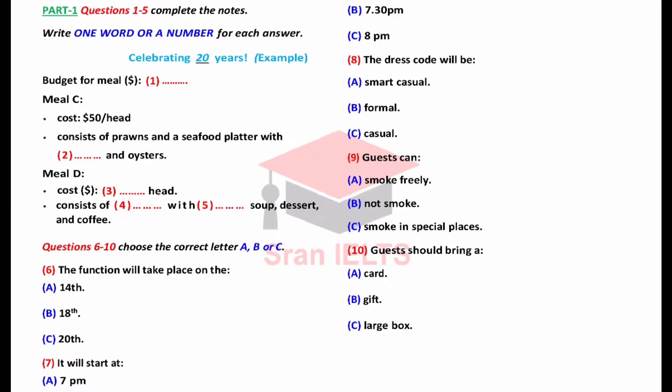Section 1. You will hear two colleagues, Marcus and Ella, discussing details about the coming office party. First, you have some time to look at questions 1 to 5. You will see that there is an example that has been done for you. On this occasion only, the conversation relating to this will be played first.